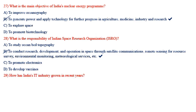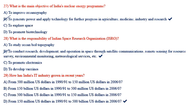How has India's IT industry grown in recent years? Options include from 500 million US dollars in 1990–91 to 150 million US dollars in 2006–07. The correct option is from 150 million US dollars in 1991 to 500 billion US dollars in 2006 and 2007.